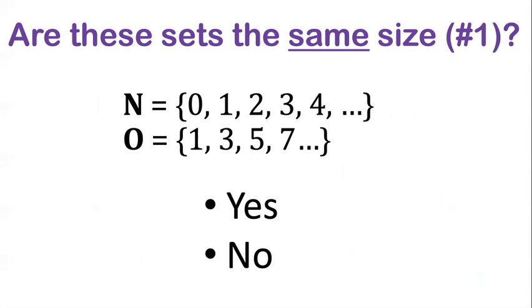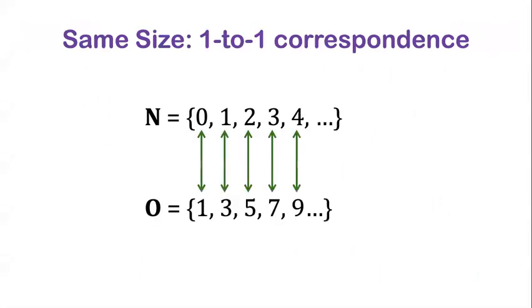Okay, it's very tempting to say the answer is no here because look, all of the odd numbers are in the natural numbers, but it also has other stuff too, so the natural numbers have to be bigger than the odd numbers. Well that's a natural thought, but that's actually wrong. These do have the same size, and what we need is a new concept in order to understand how to compare the sizes of infinite numbers.